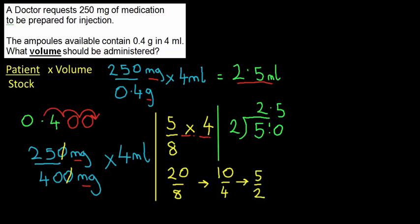That was the first example where the units in the fraction were not the same. No need to panic — simply convert one of them to make them the same, then proceed as normal. On to the final question.